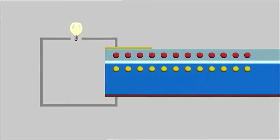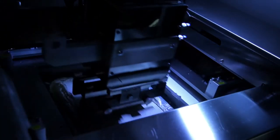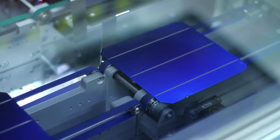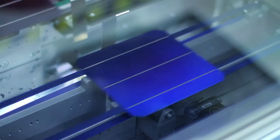But how is the power that is generated in the individual cells transported? A stamp presses a silver alloy onto the front of the cells. This creates the typical grid pattern. This silver coating ensures that the power can be transported later on.